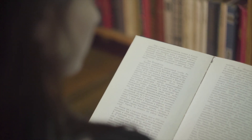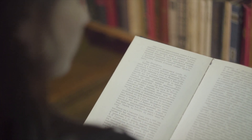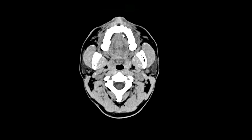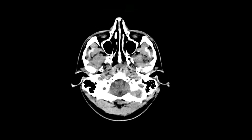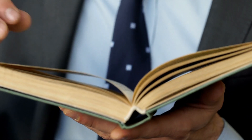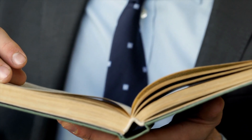So why does this happen? You read probabilistically. You don't look at each word, figure it out, then move to the next word. You don't actively read every word in a sentence. Your brain looks for patterns and infers the meaning of the sentence based on keywords and its experience reading similar sentences.